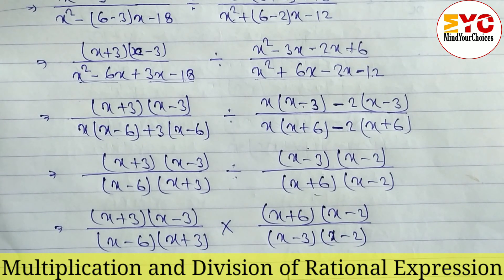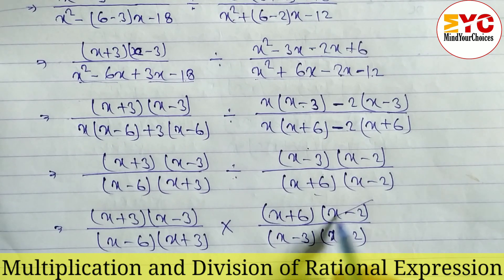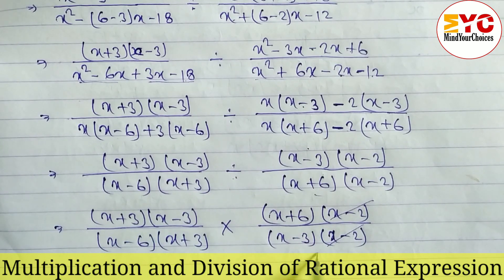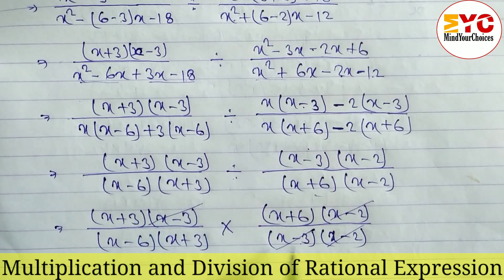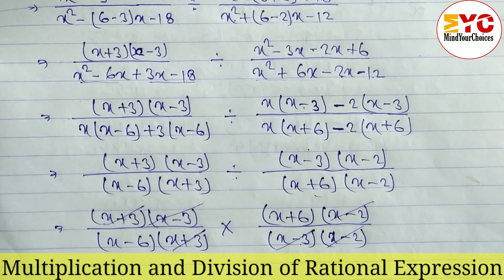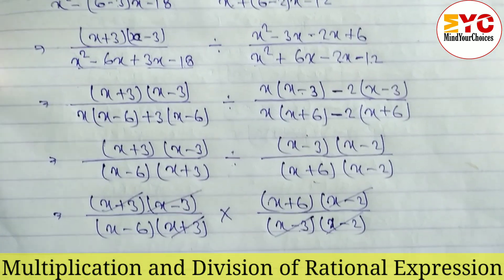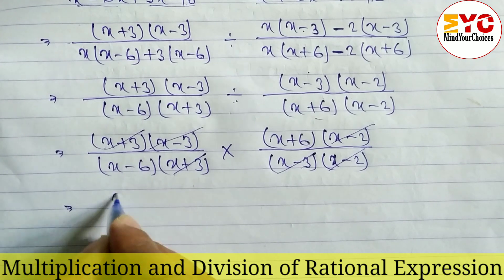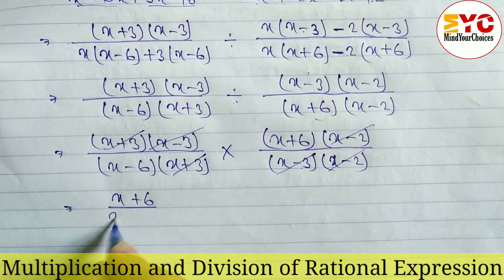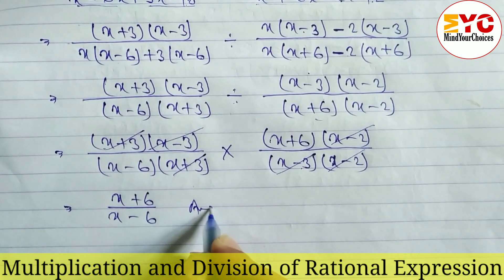Now we cancel any same factors in the numerator and denominator. We can see x minus 2 cancels with x minus 2. We can also cross-cancel x minus 3 with x minus 3 since there is multiplication. Similarly x plus 3 cancels with x plus 3.